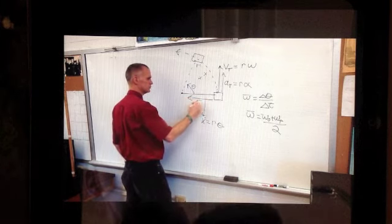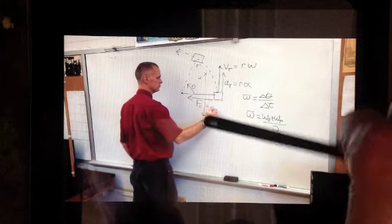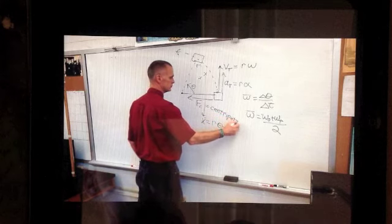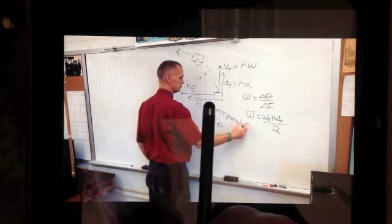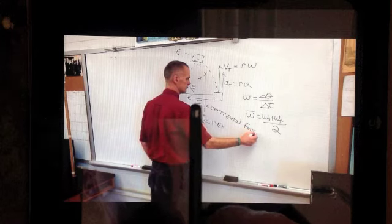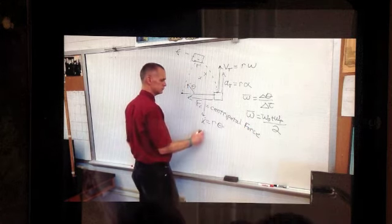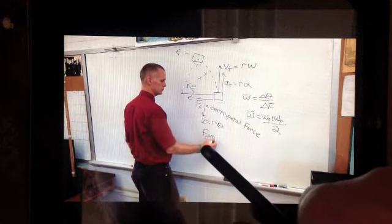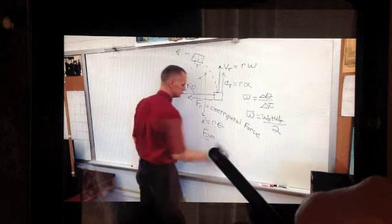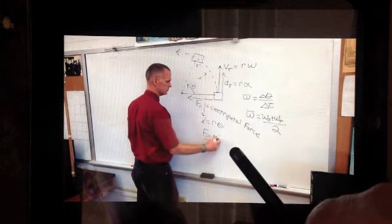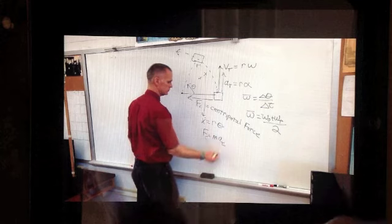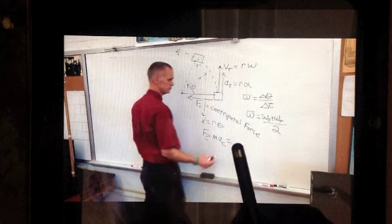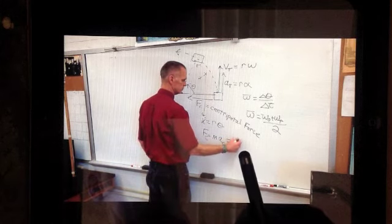Now, what we're looking at today is we have that string is pulling in. We call that a centripetal force. Centripetal is pulling in. So Newton's second law tells me any force I have is always equal to this mass times the acceleration. But the acceleration has to be in the direction of the force. So my centripetal force is equal to the mass times my centripetal acceleration. And without going into the math because it's a little complicated, you can show that that force is equal to mv² over r.